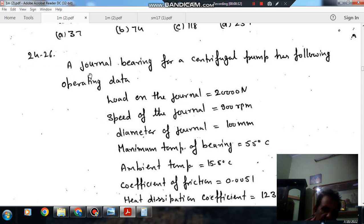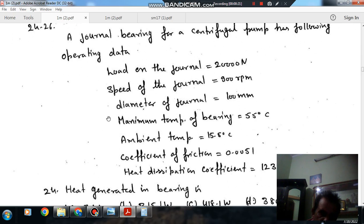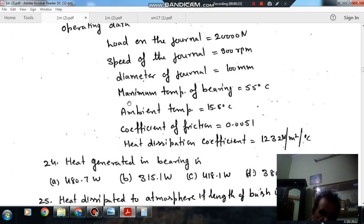Strict care is a common statement. The statement is a general bearing of 4.0 has following official data. Load on general 20,000 N, speed of general 900 RPM, diameter of general 100 mm, maximum 5 dB Celsius. Coefficient of friction 0.0051, heat dissipation coefficient 1232 Watt per m squared per degree Celsius.